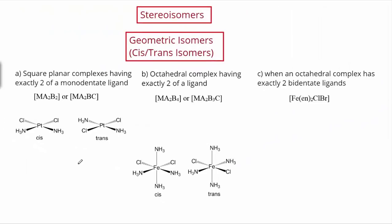Now let's take a closer look at stereoisomers. The first type we'll examine at length are geometric isomers — the cis-trans isomers. These can occur in three different situations. The first is in square planar complexes where you have exactly two of a monodentate ligand. The two chlorines can either be 90 degrees apart (cis) or 180 degrees apart (trans). You have to be told these are square planar, because in a tetrahedral complex with coordination number 4, all angles would be 109.5 degrees — there'd be no 90 versus 180 distinction. So it's not enough just to see coordination number 4; you must be told it's square planar, not tetrahedral.